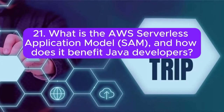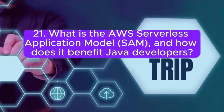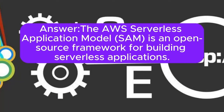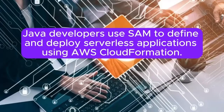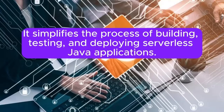Question 21: What is the AWS Serverless Application Model SAM, and how does it benefit Java developers? The AWS Serverless Application Model SAM is an open-source framework for building serverless applications. Java developers use SAM to define and deploy serverless applications using AWS CloudFormation. It simplifies the process of building, testing, and deploying serverless Java applications.